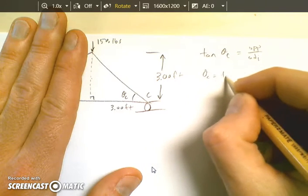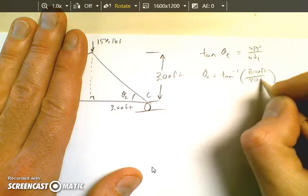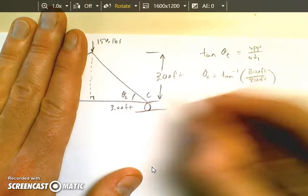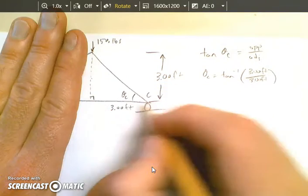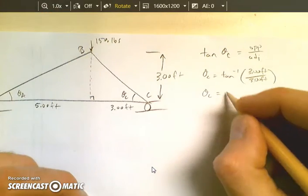So theta C is the inverse tangent of 3 feet over 3 feet. Some of you can see this and understand that this is a 45-45-90 triangle since these two sides are the same length. But it comes out, the inverse tangent of 1 is 45 degrees.